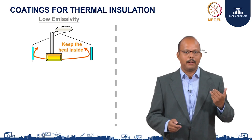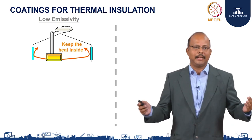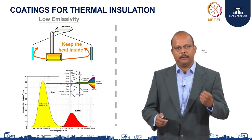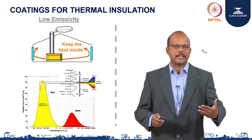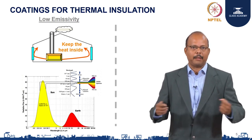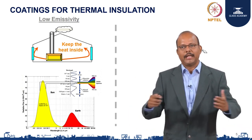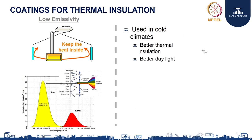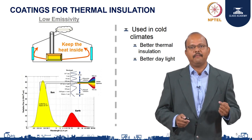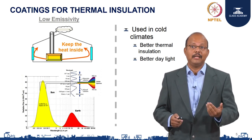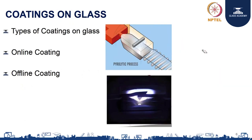The second application is low emissivity, where the interest is to keep the heat inside the building. The major focus is on controlling emissions from the black body emissions within the building. Here the glass acts as a complete insulation material. The application is mainly in cold climates for better thermal insulation and allowing daylight entry into buildings. These functionalities are achieved by two major processes: online coatings and offline coatings. We will see each in detail in the coming slides.